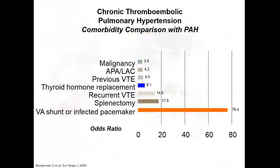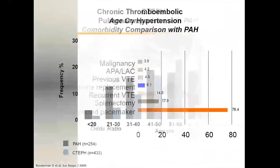There are certain comorbid states that predispose patients to develop CTEPH. The odds ratio is significantly increased for malignancy, antiphospholipid syndrome, previous history of venous thromboembolism, thyroid hormone replacement, splenectomy, and infected pacemaker leads or VA shunts — all carrying a significant increase in risk for developing chronic thromboembolic pulmonary hypertension.